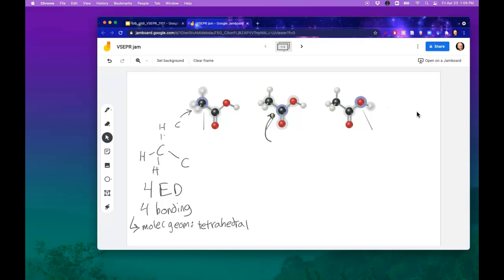But what if we look at that carbon in the middle? This carbon in the middle is double bonded to an oxygen, bound to a carbon, and bound with a single bond to the oxygen here. In this case, there are only three electron domains around the carbon. Three electron domains, three bonding domains, and that would mean trigonal planar. And that's true for both the electronic and molecular geometry.